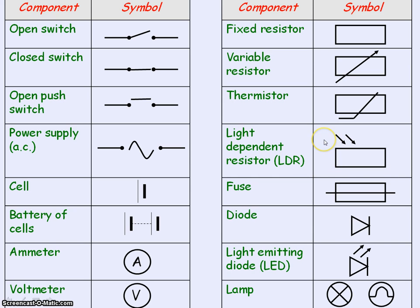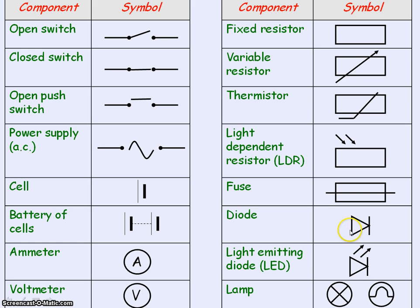This one is a light dependent resistor, where the arrows represent the light shining on the resistor, so the resistance changes with light intensity. This one is the fuse. The next two represent diodes — a diode only allows current to flow in one direction, so the triangle part of the diode symbol indicates the direction in which it will allow current through. This one is a light emitting diode, where the arrows represent the light being emitted from the diode. The final symbol is the lamp.